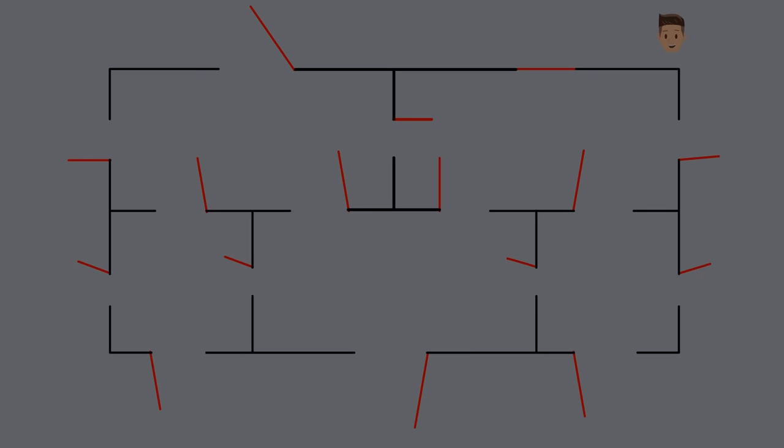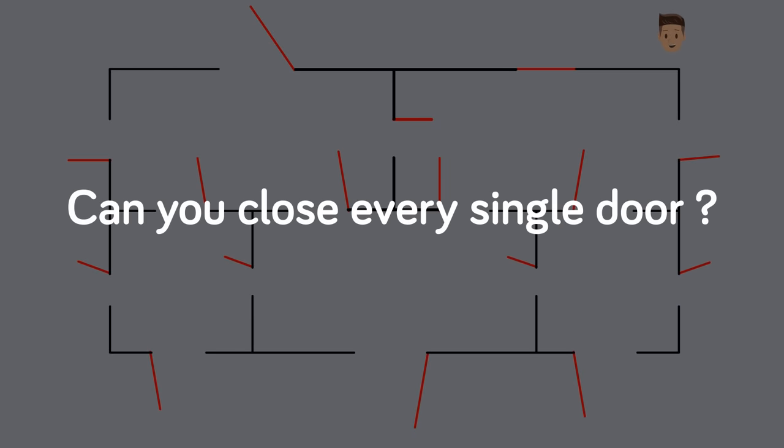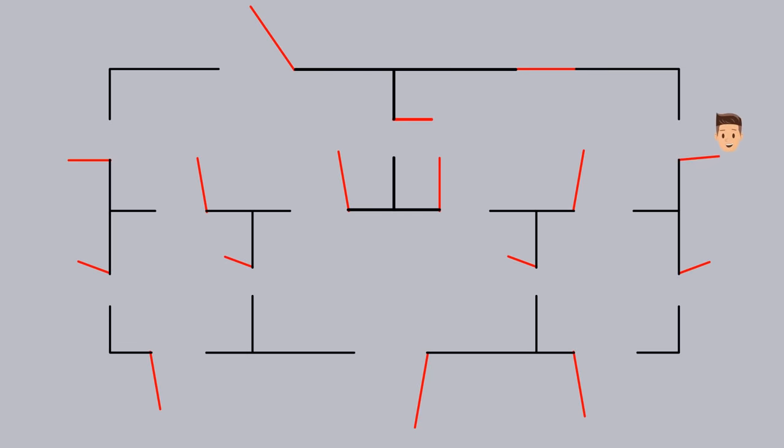The question is simple, can you close every single door, assuming you can start wherever you want. And yes, the only way to close the door, by the way, is walking through it. Again, this would be a pretty tough question to just brute force, so we got to find some way to cleverly represent the system. Now, I'm just going to get to the answer, pause if you don't want to know it, but the answer is no, you cannot walk through every door. As you can see in this example, we still have two doors open that we just can't get to.